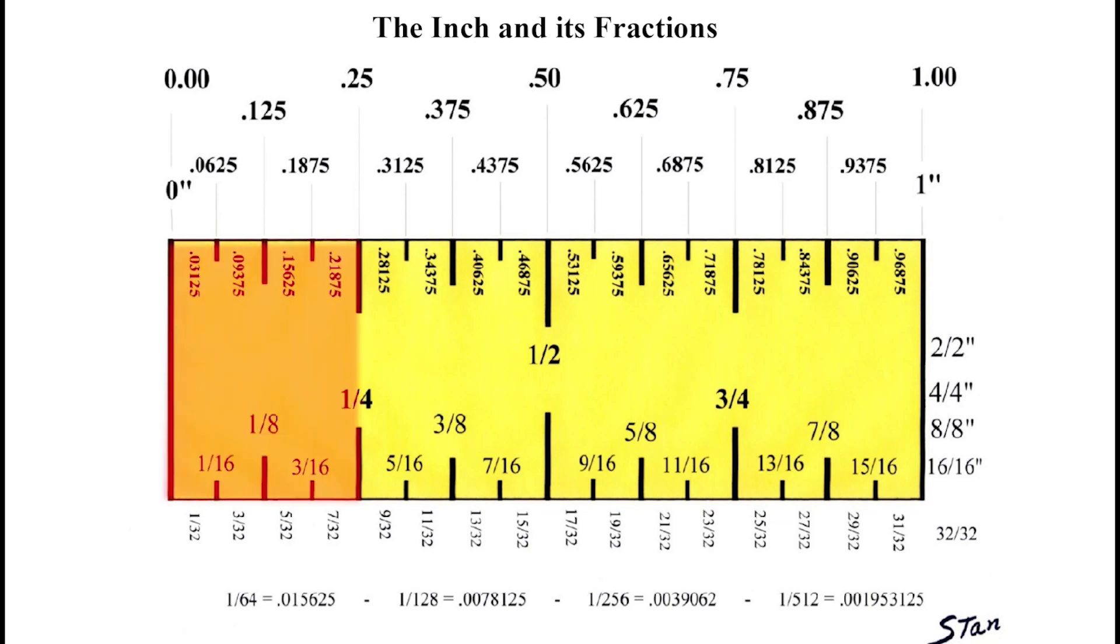When we divide the quarter by two, we get one eighth of an inch. And you got it, there are eight of them in the inch. One eighth, one quarter, three eighths, one half, five eighths, three quarters, seven eighths, one inch.